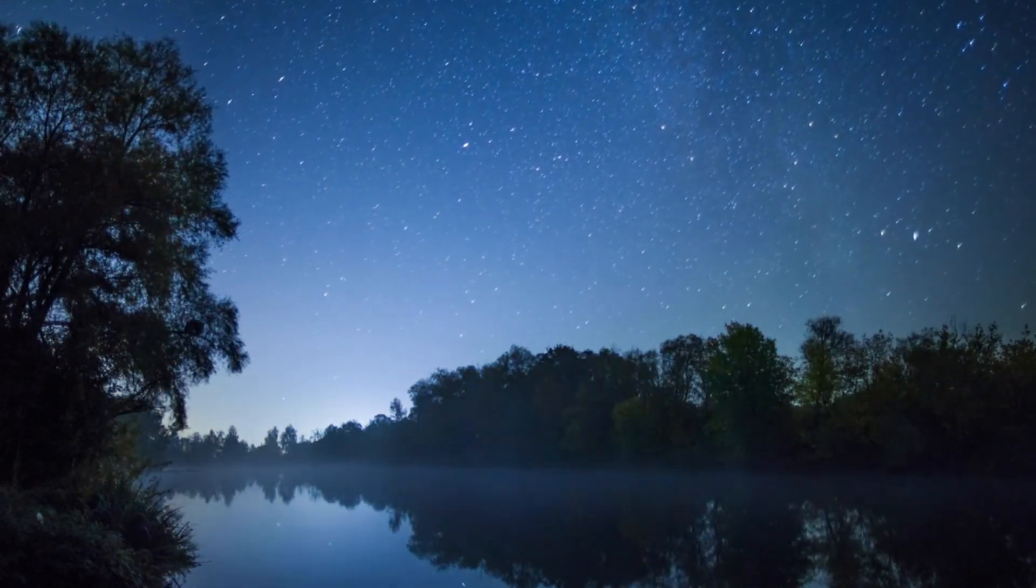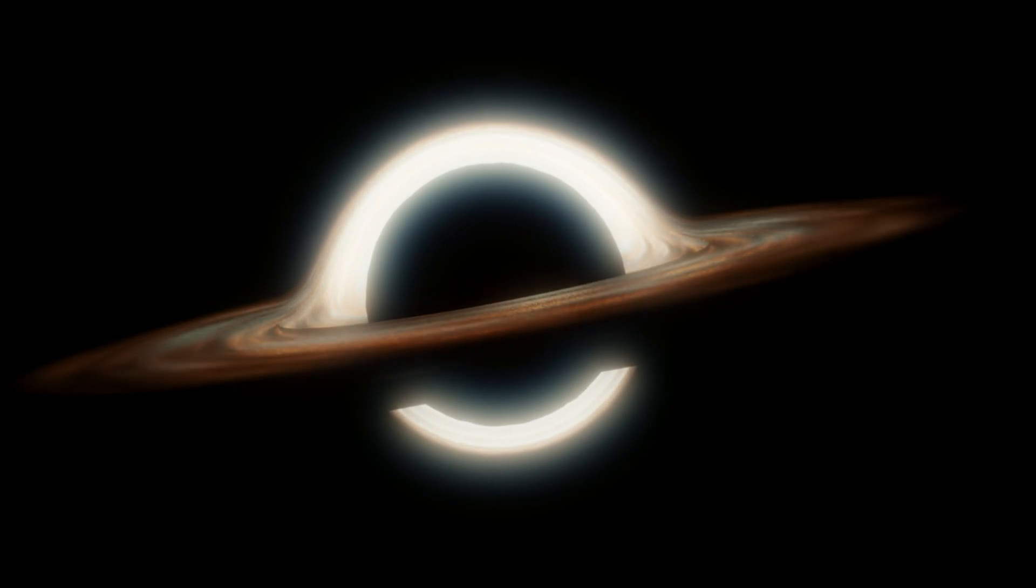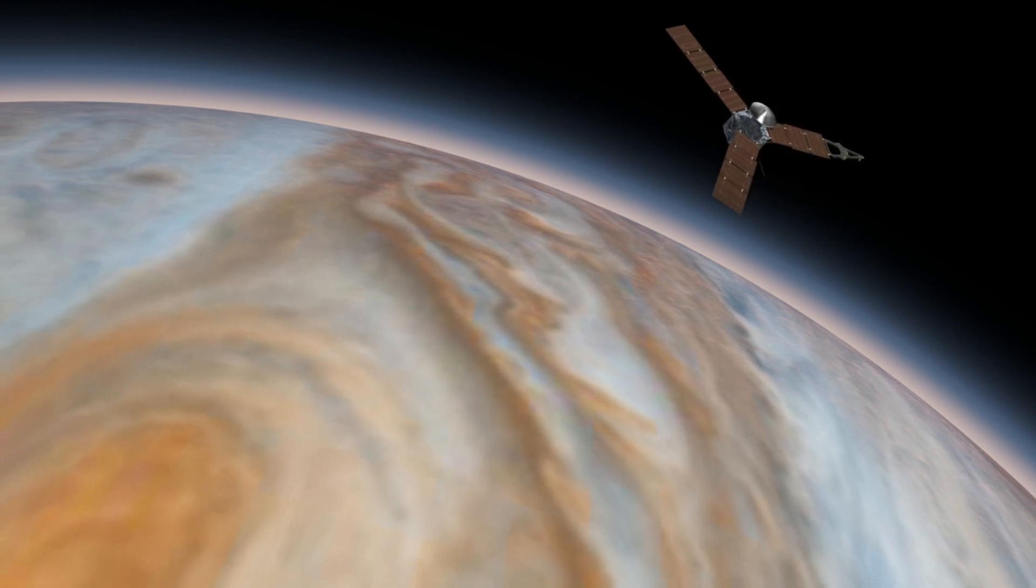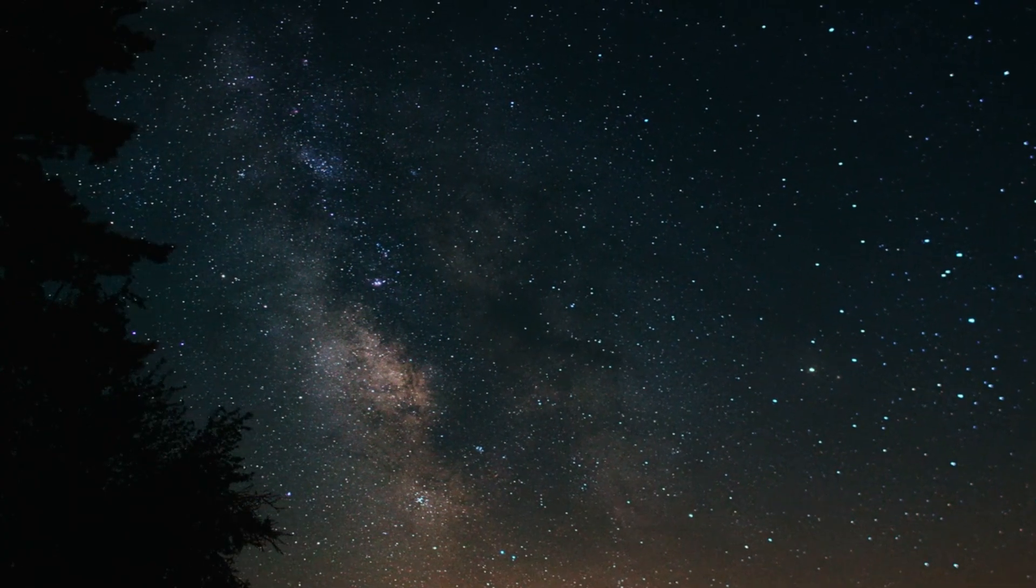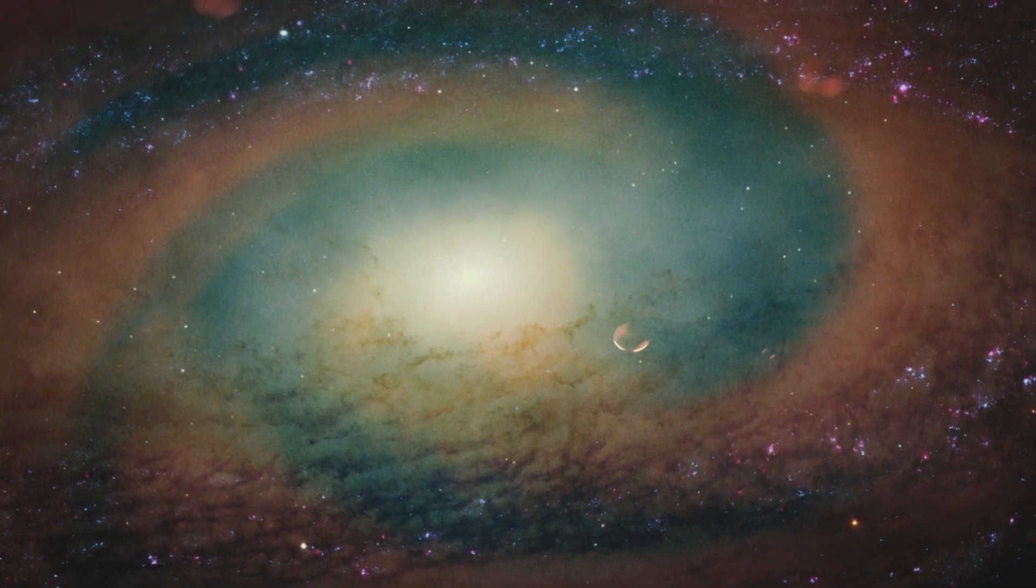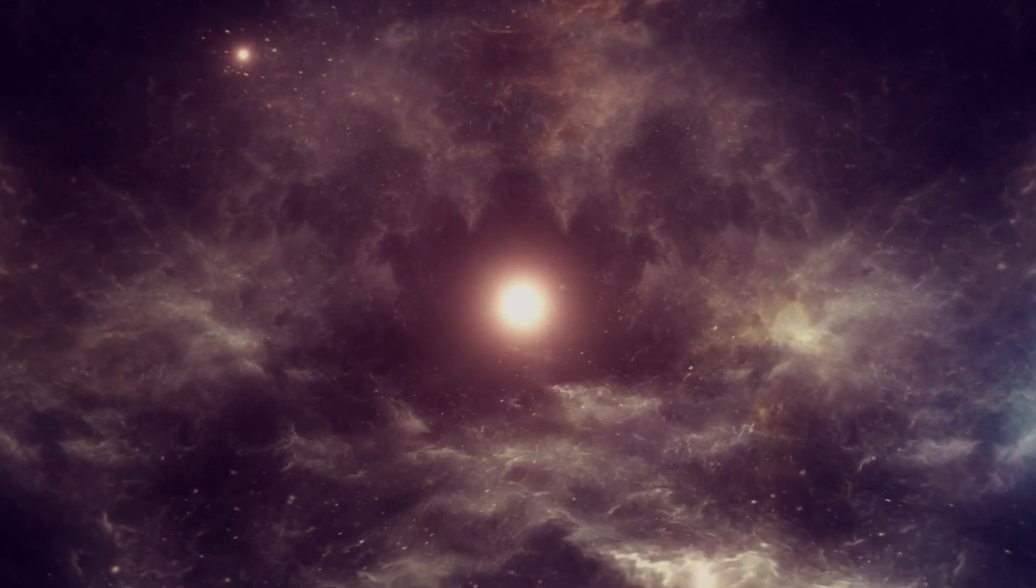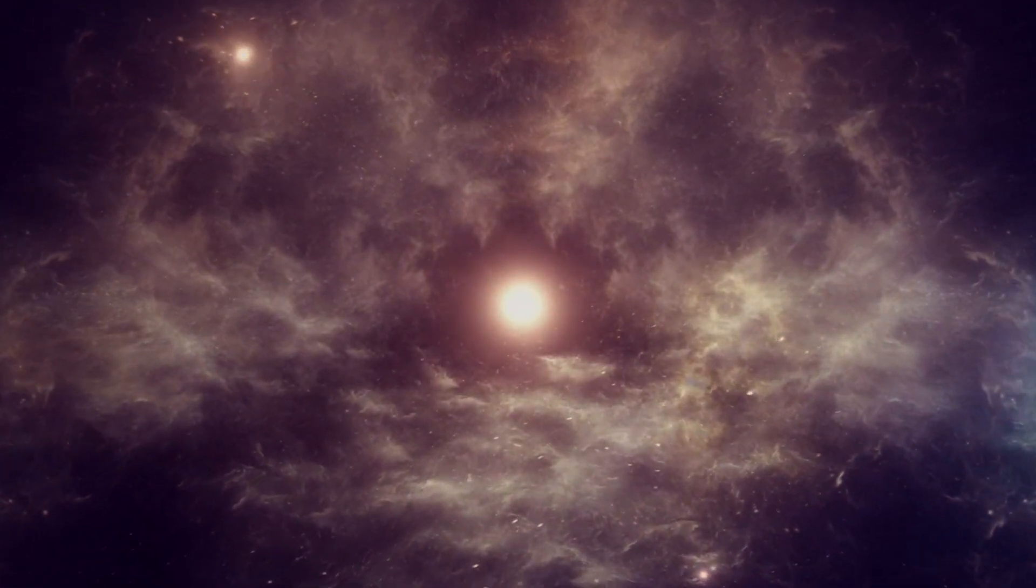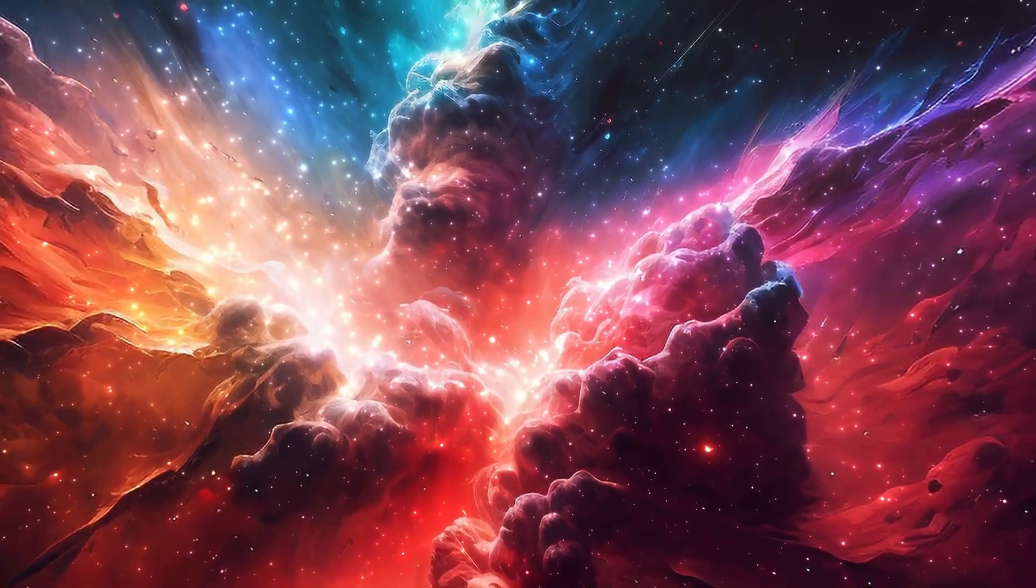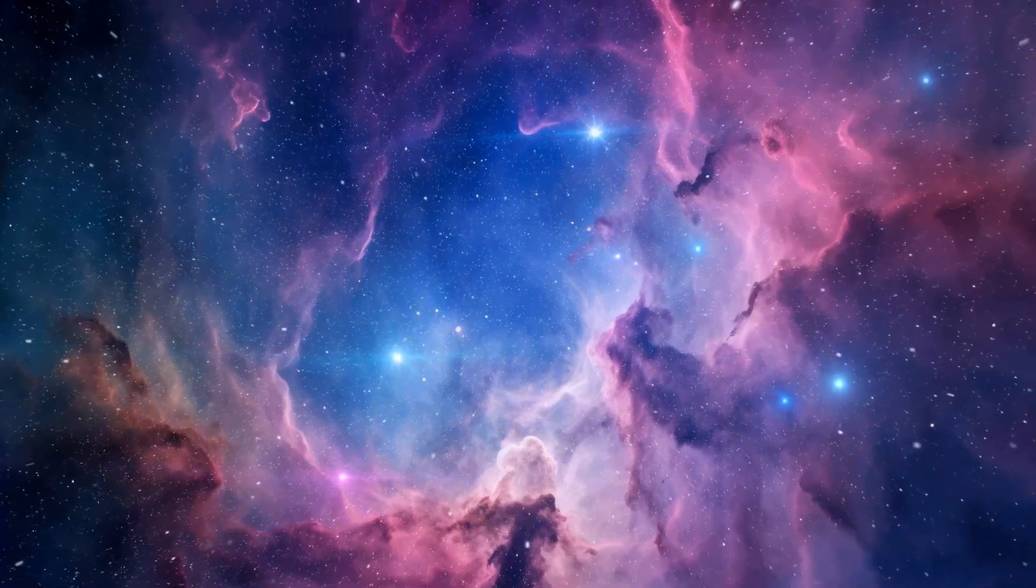The event horizon is the defining feature of a black hole. It marks the boundary beyond which nothing can escape the immense gravitational pull—the point of no return beyond which gravity is so strong that nothing can escape, including stars, planets, and even entire galaxies that stray too close. Not even light, which travels at the fastest speed possible, can outrun the gravitational pull once it crosses the event horizon. This is why black holes appear completely dark. Think of it as a one-way membrane—it allows matter and radiation to enter, but nothing can escape once it has crossed this boundary. You can pass through it going in, but you can never come back out.